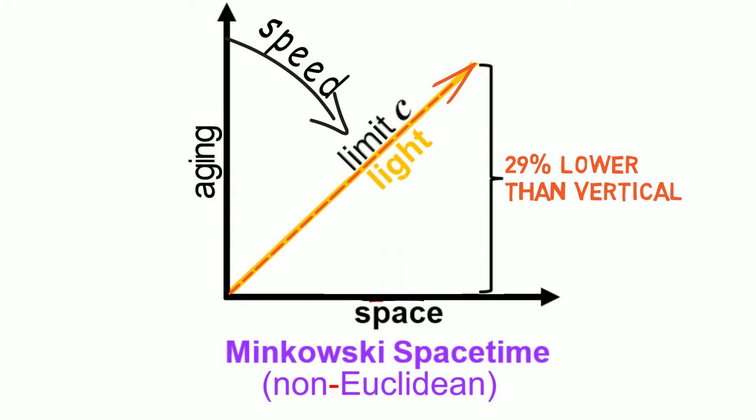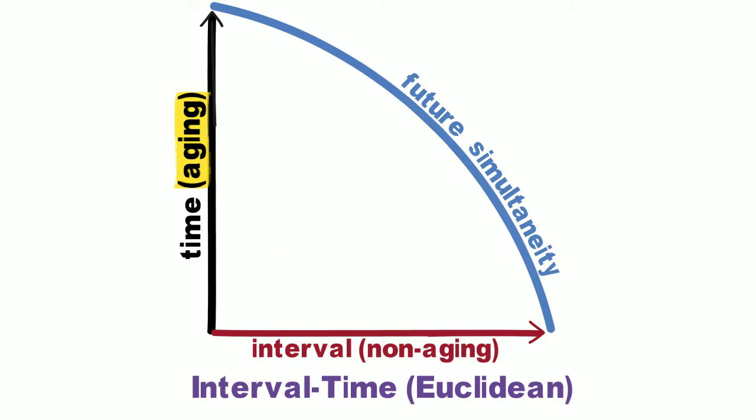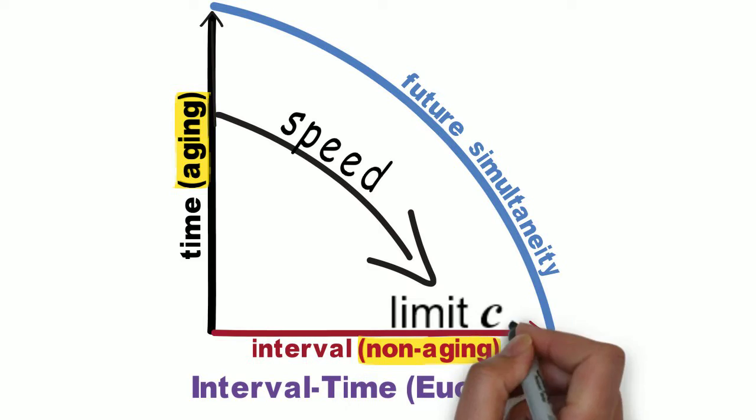However, Euclidean intuition doesn't apply to non-Euclidean space-time. By contrast, while interval time coordinates retain a vertical aging coordinate, light, being non-aging, has slope 0, falling on the horizontal axis.